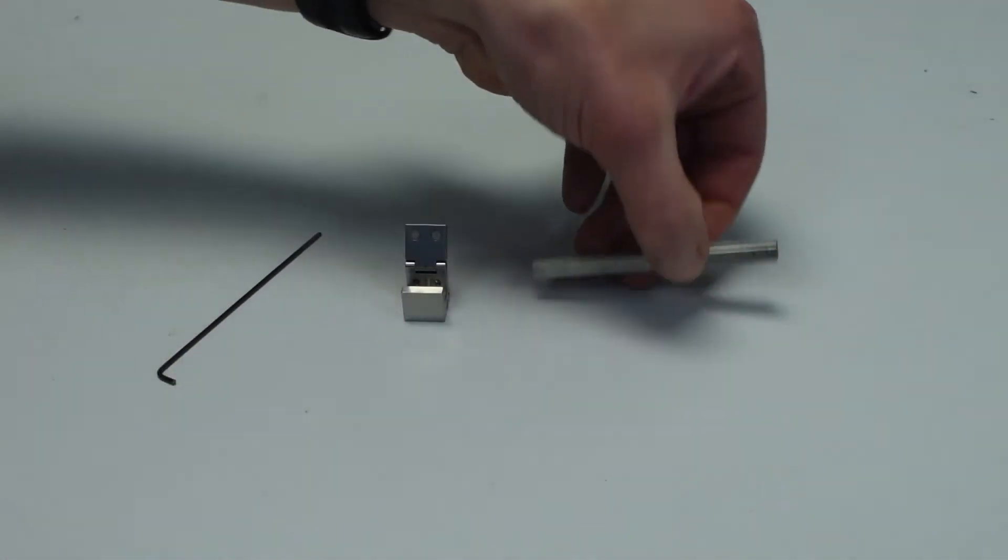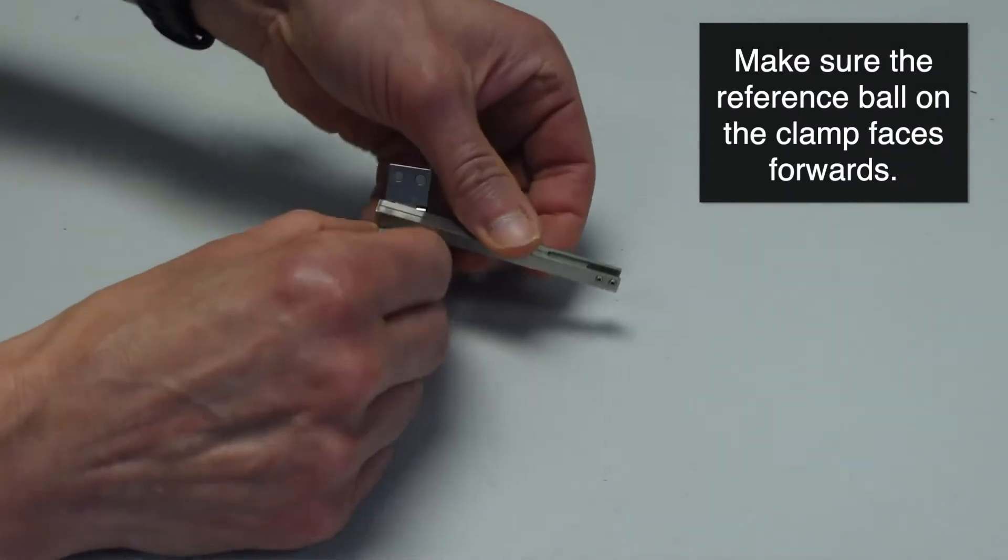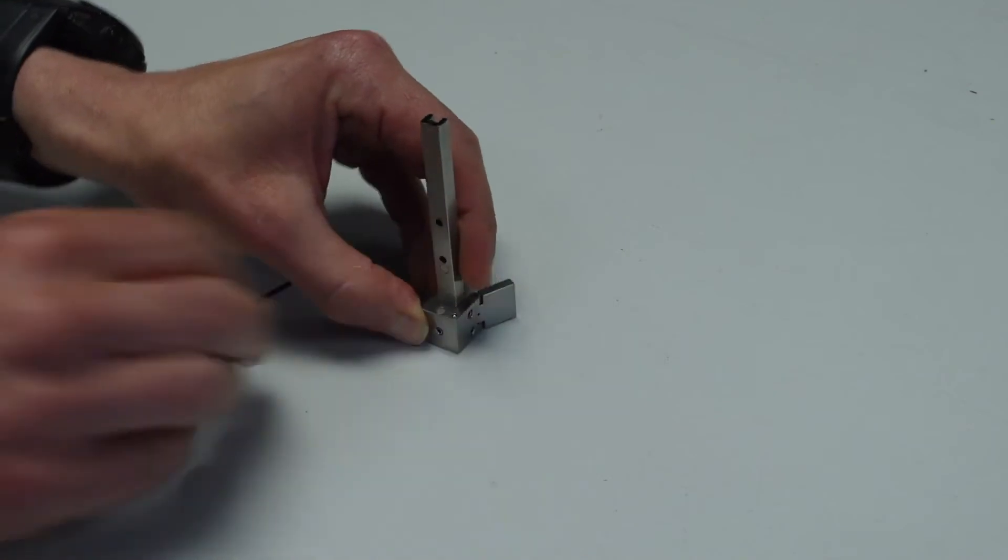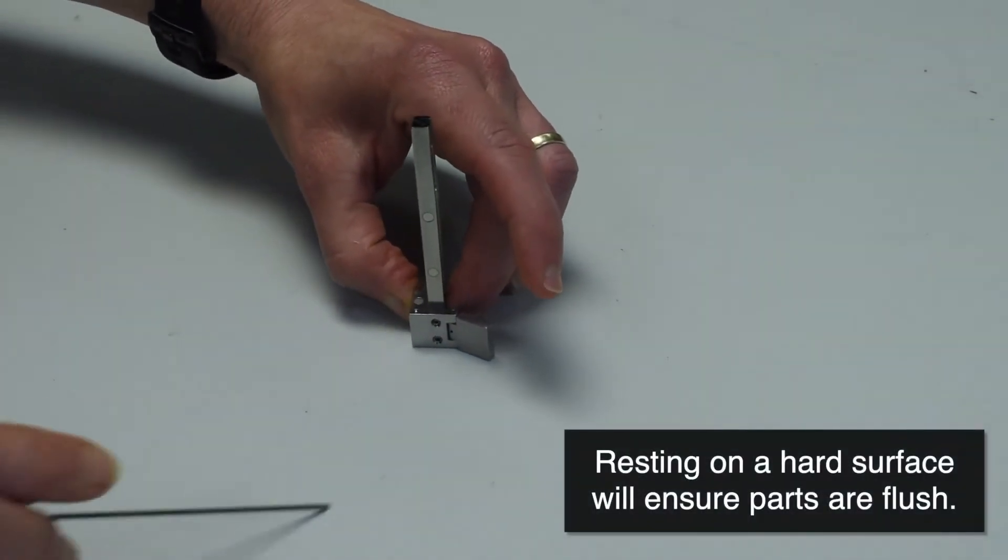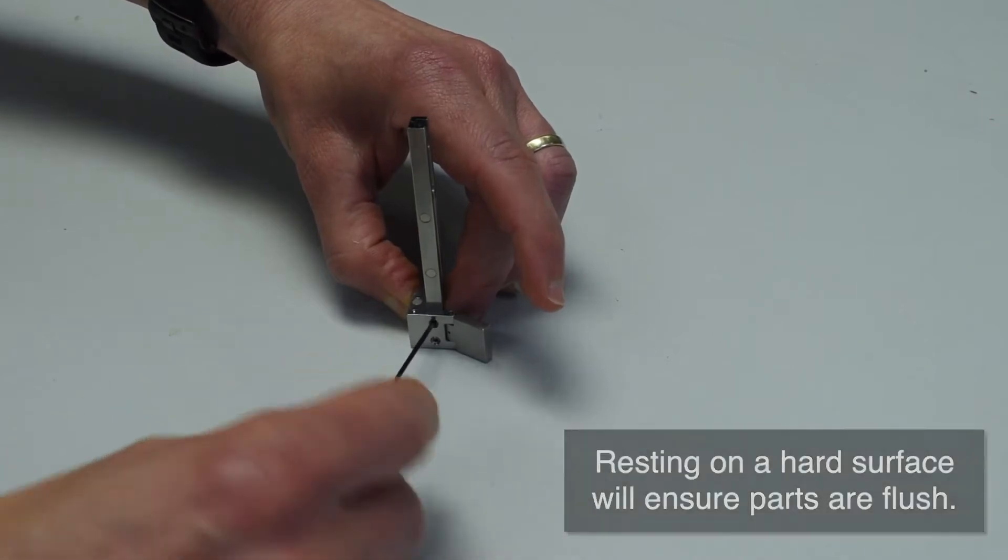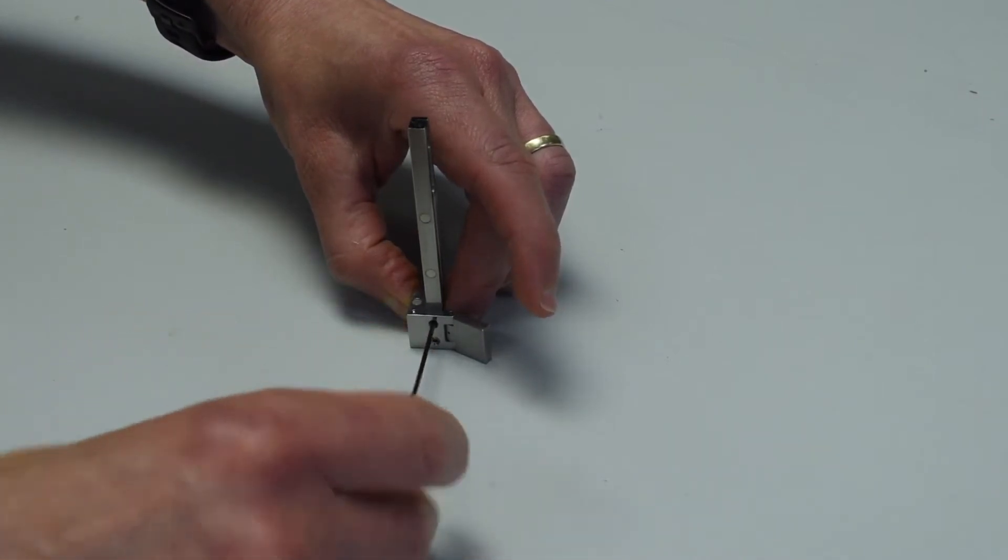Place the back of the transfer insert into the transfer clamp ensuring that the v-groove for the fiber is facing upwards. Ensure that the back edge of the insert is flush with the back edge of the transfer clamp. Now tighten the screws on the back of the transfer clamp.